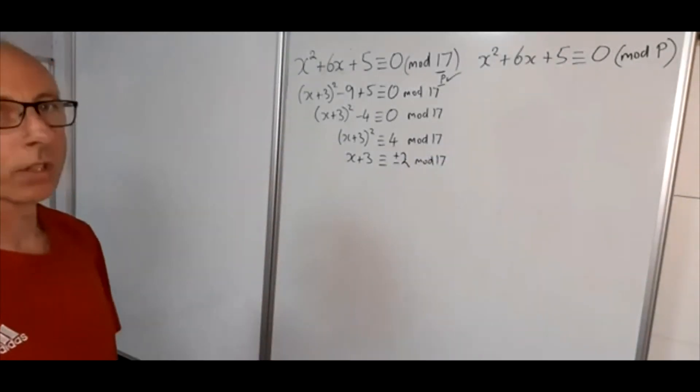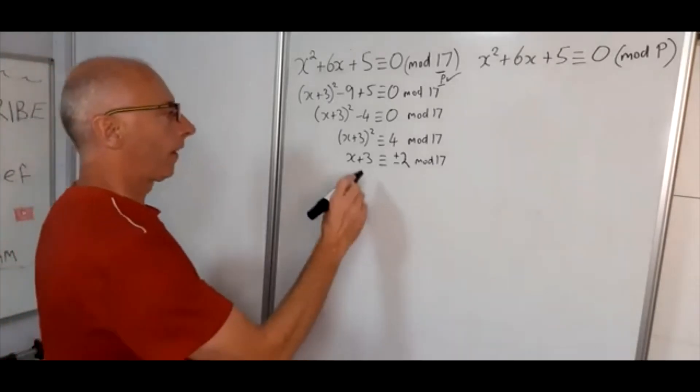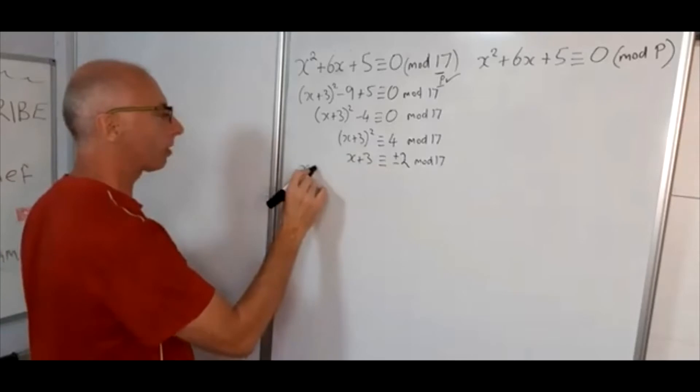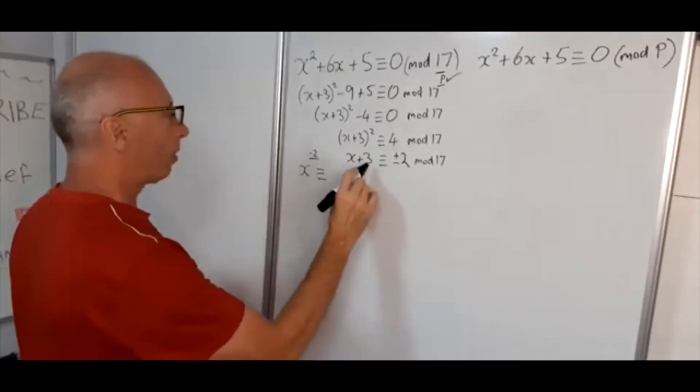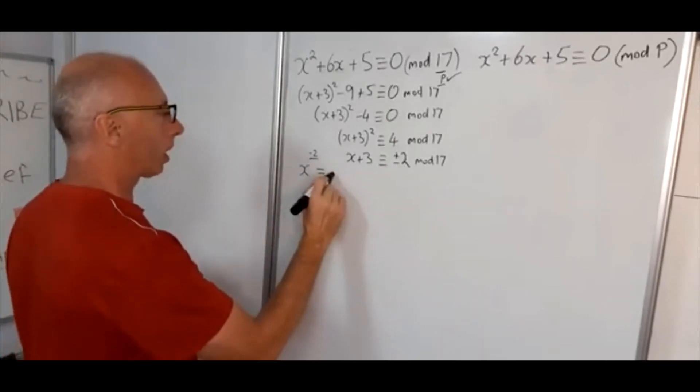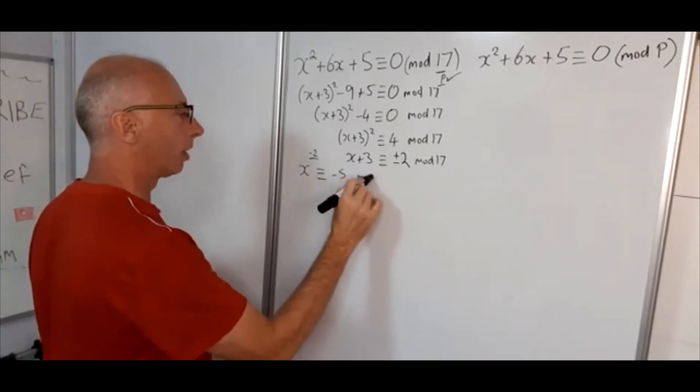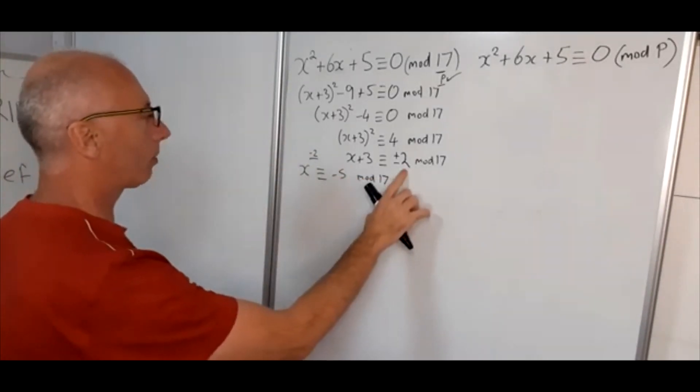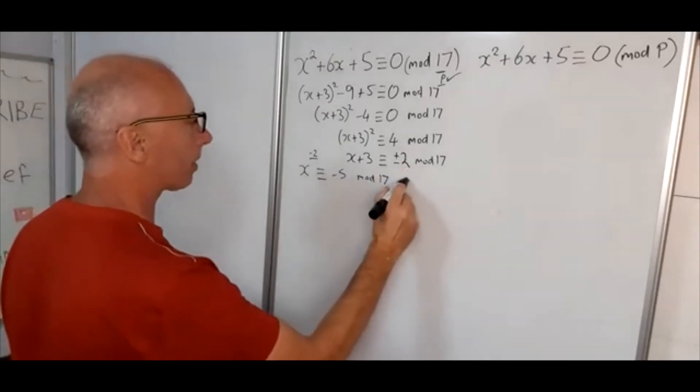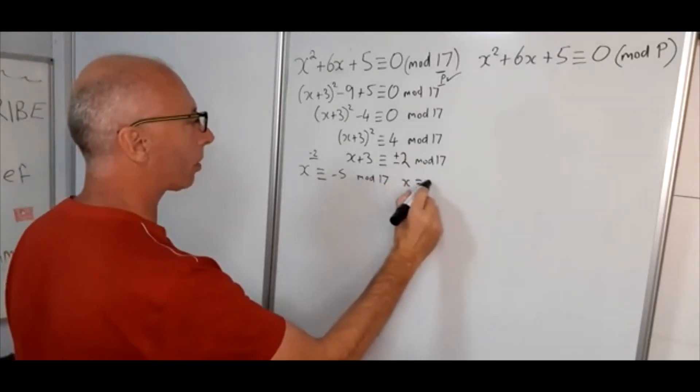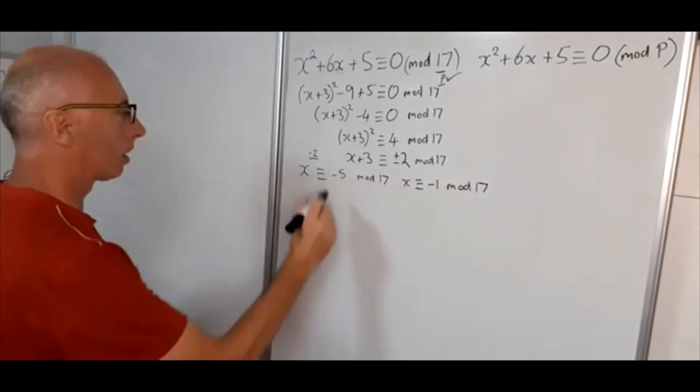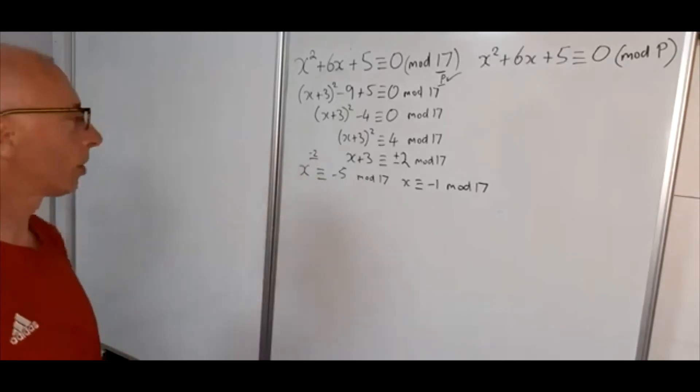Okay, so now we're going to get a couple of solutions here. So subtract 3 from both sides. Let's just split them into 2. So now x will be congruent, so on the minus 2 case here, minus 2 minus 3 will give us minus 5 mod 17. And on the other one with the positive 2 we'll get x is congruent with minus 1 mod 17. So that's our two solutions so far.